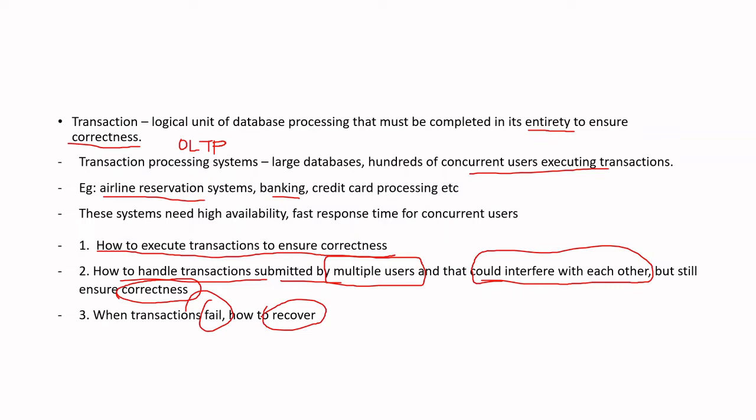We can have systems failing. For example, when you do Google Pay to transfer money, sometimes the transaction did not happen because of network issues, an error in your system, or the power went off and your mobile phone died. Any sort of failure can happen. Our system should be capable enough to recover from such failures. If your account is deducted a certain amount and mid-way there is a failure, recovery happens and your account gets credited at some point later on.